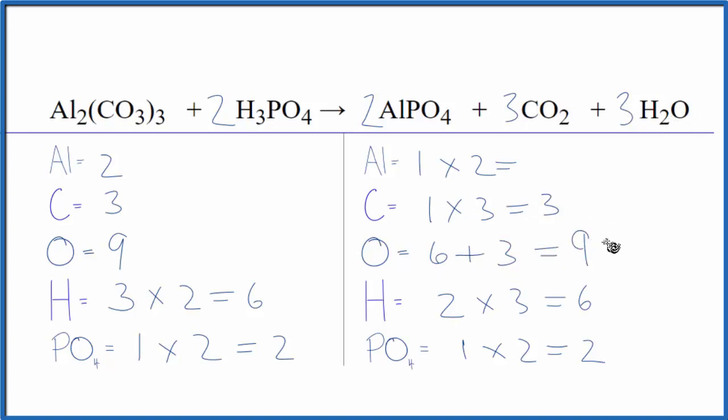We're done. This equation is balanced. So two things we did here. One is we counted the phosphate ion as just one thing because it appears on both sides. We couldn't do that for the carbonate because there's no CO3 over here. Then we left our oxygens to last and things just seemed to work out.